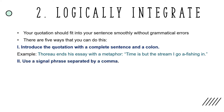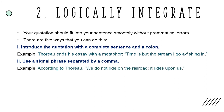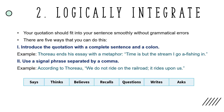Next, you can use a signal phrase separated from the quotation with a comma. For example: "According to Thoreau, 'We do not ride on the railroad, it rides upon us.'" Consider using a variety of verbs to introduce your quotation, such as says, thinks, believes, recalls, questions, writes, and asks. Additionally, you should always use present tense verbs in your signal phrases.